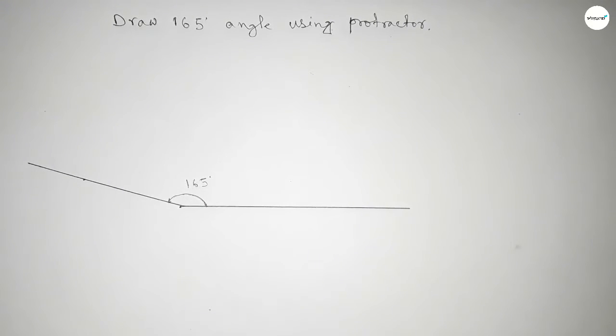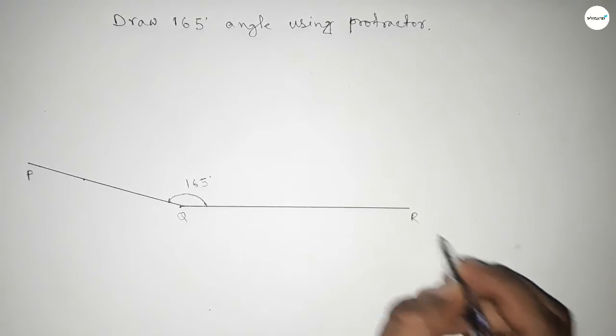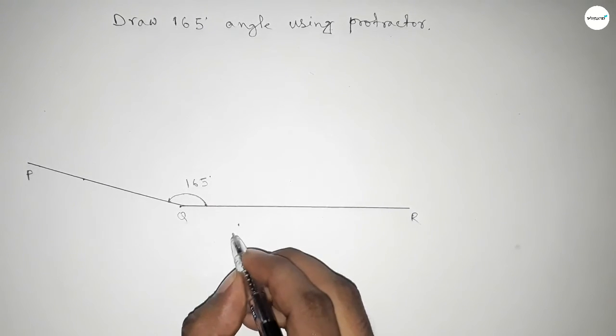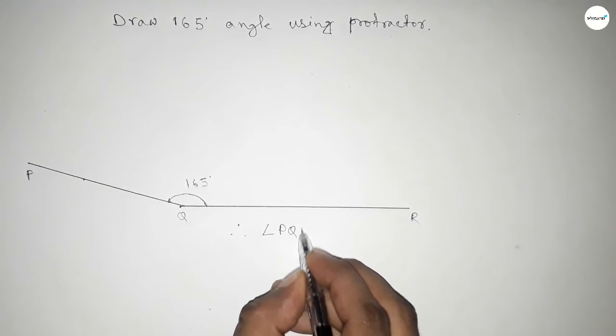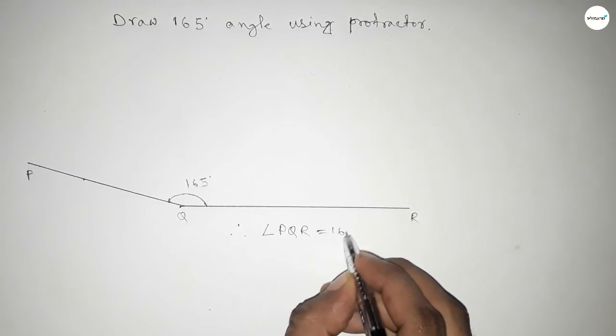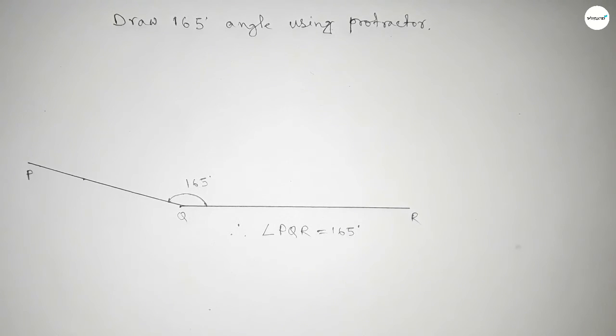This is P, Q, and R. Therefore, angle PQR equals 165 degrees. That's all, thanks for watching. If this video is helpful to you, please share it with your friend.